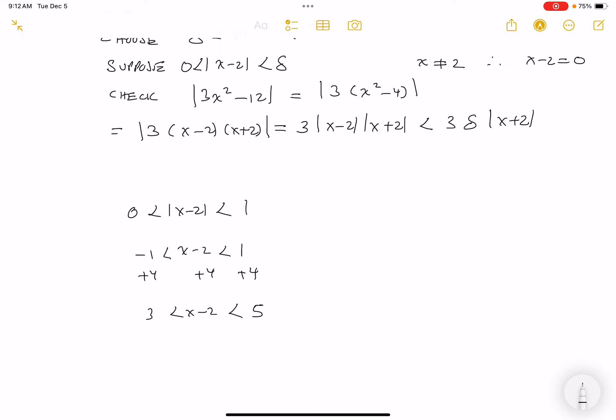And what do you get there? You get 3, x plus 2, and then you get 5 over here. And this is convenient because now I can write an absolute value down. And what do I know? This is going to imply that the absolute value of x plus 2, and the greater of those two numbers is 5, so less than 5.